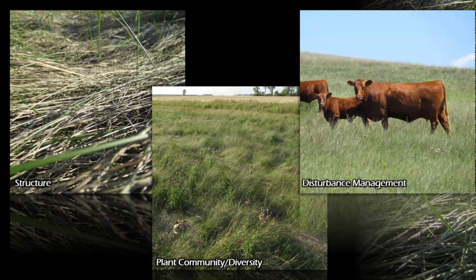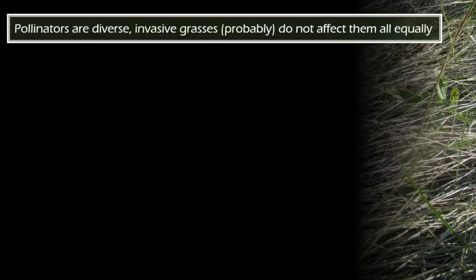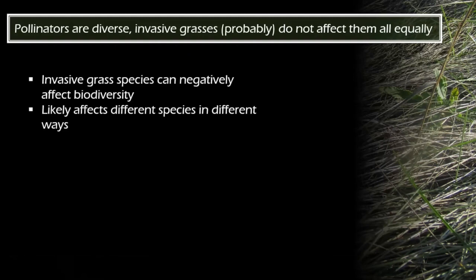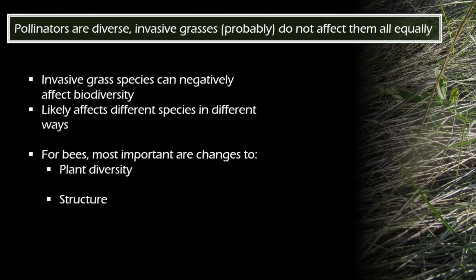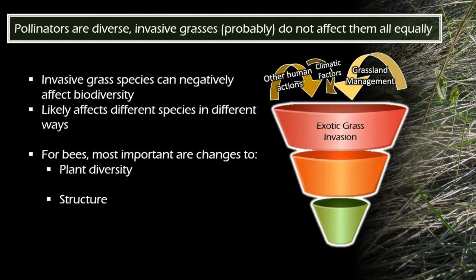Another big thing that encompasses everything is general management. Unfortunately, my dataset doesn't address management specifically, but it can provide some ecological basis for informing management actions. Invasive grasses have the potential to impact biodiversity, but it's unreasonable to expect that invasive grasses will affect all bees in the same way, since bees are very diverse. Exotic grass invasions could impact the plant community, deciding what forb species are there, which then determines what bee species can be there — an indirect relationship.